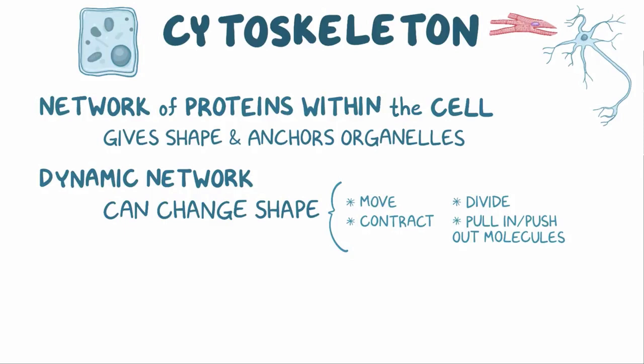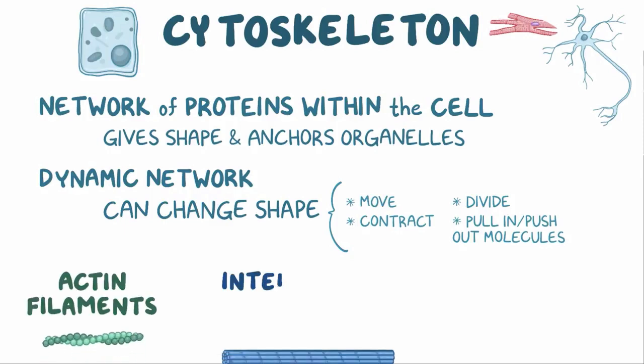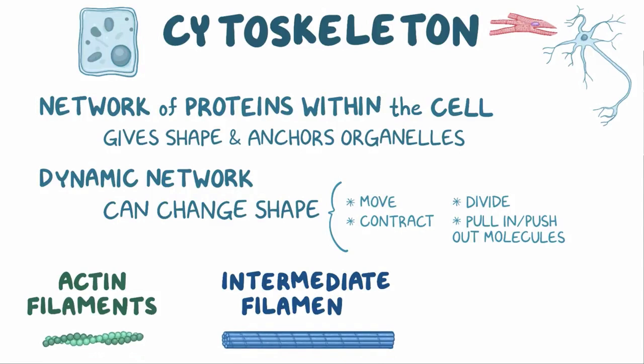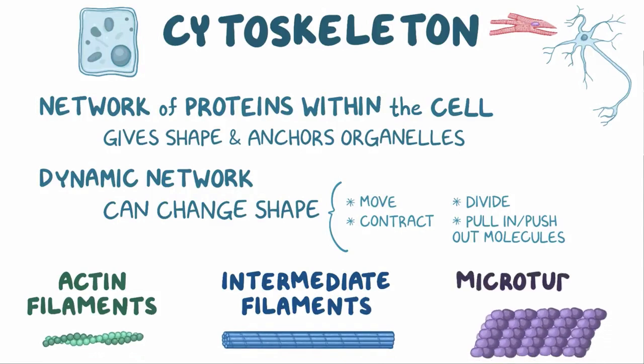The cytoskeleton is pretty special, and it's made up of three proteins: actin filaments, intermediate filaments, and microtubules.